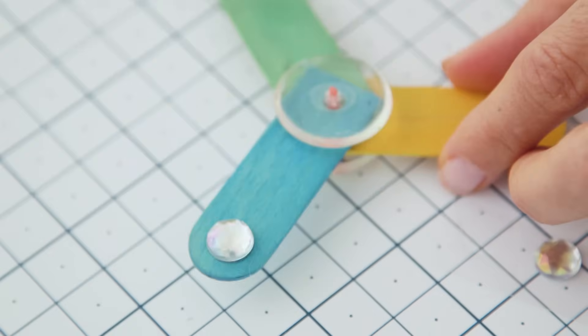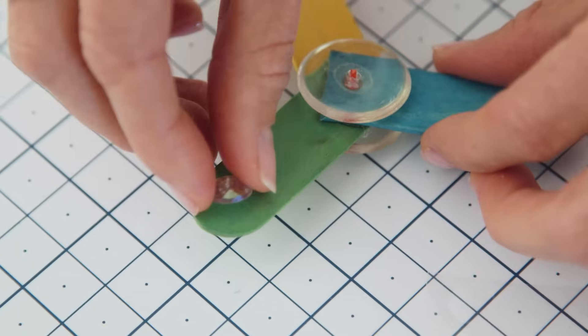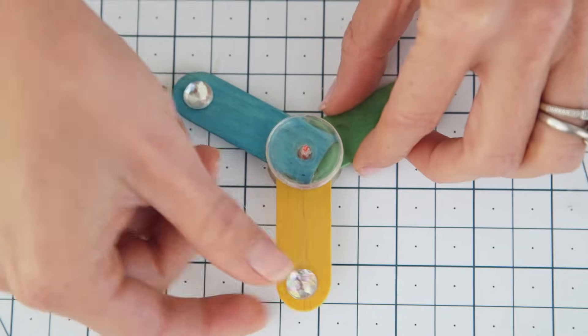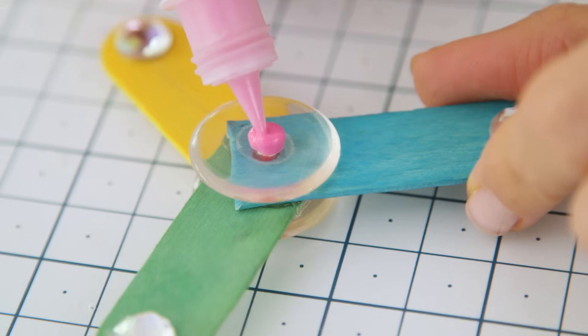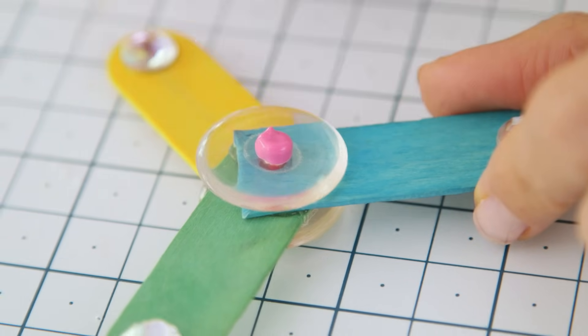I'm going to finish it off with these holographic gemstones because they give the ends a little weight and they also look super cool when it spins. You can also add some puffy paint to the end of the toothpick for a pop of color and a cleaner look.